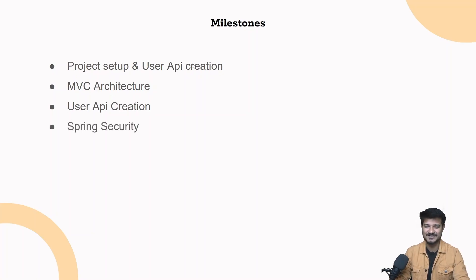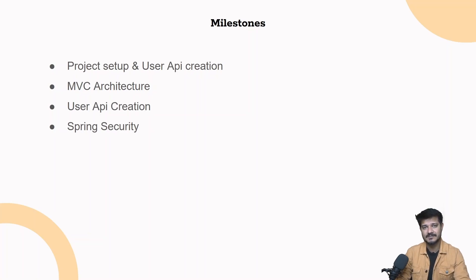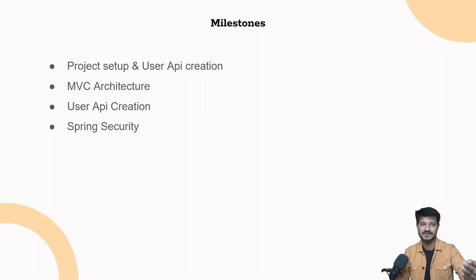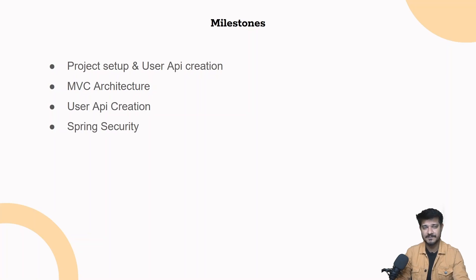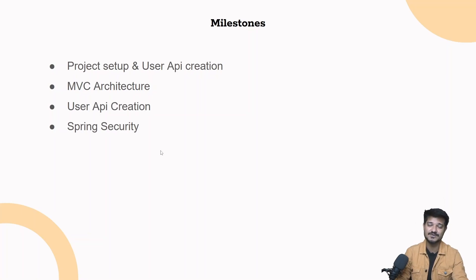After the MVC architecture, we'll cover Spring Security — a very important part. You don't want every single endpoint accessible by everyone. Some may be public, like the home page where you don't need to be logged in, similar to facebook.com. But other endpoints, like a user's chat history, require authentication. All of this is implemented using Spring Security, so we'll learn about it in depth and add it to our project.